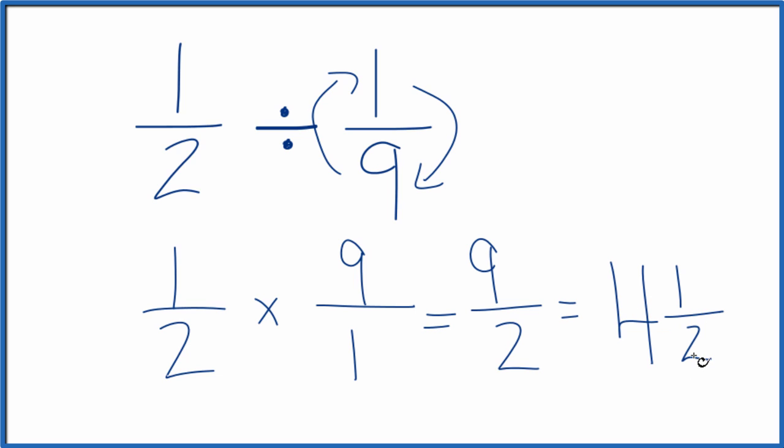Four times two is one, plus one, that gives us the nine. So nine seconds is equal to four and one-half.